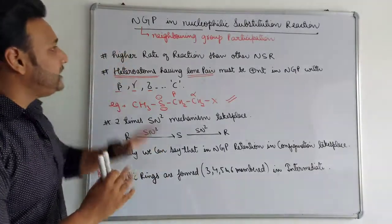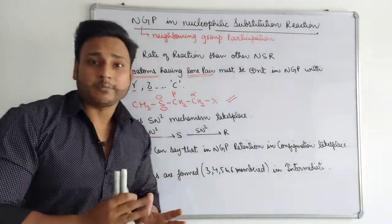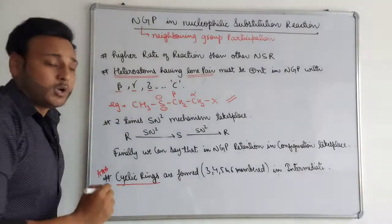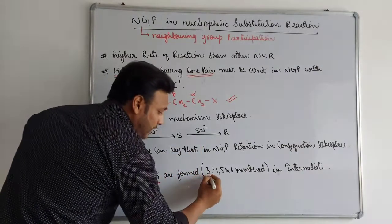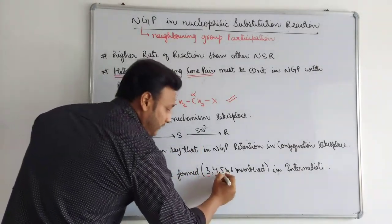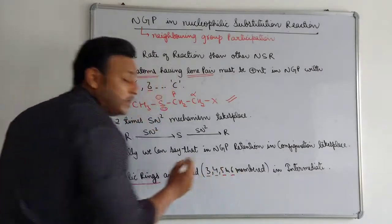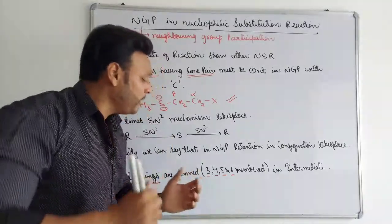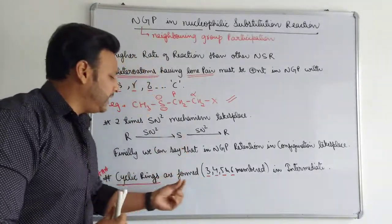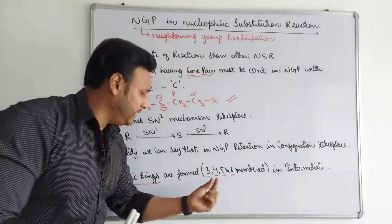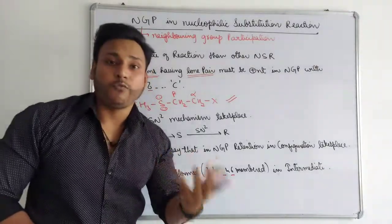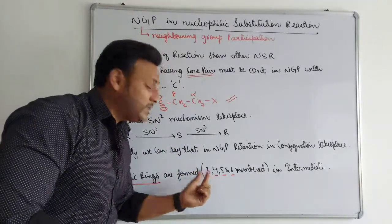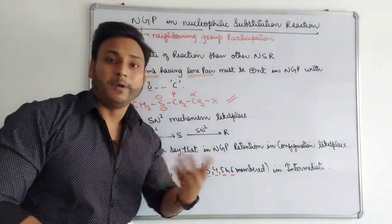When NGP occurs in a nucleophilic substitution reaction, there will always be a cyclic ring formation. That cyclic ring will be either three-membered, four-membered, five-membered, or six-membered. Now I am going to ask a question: if you have done NGP and made two types of rings — one three-membered and one four-membered — which ring will be more reactive?